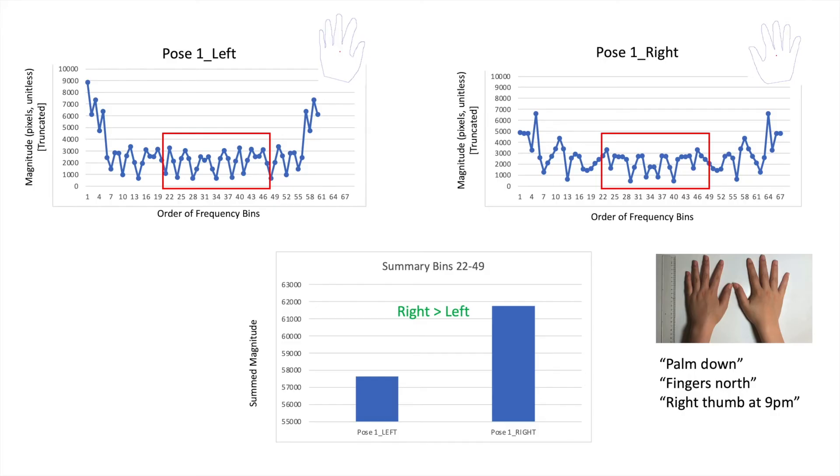We were able to tell left hand from right hand by looking at the sum of the middle bins of the frequency plots, which are outlined in red. The bar graph at the bottom demonstrates an index that quantifies a difference that is not obvious to the naked eye. For all of my hand images, I also put a ruler next to my hand for a sense of scale.